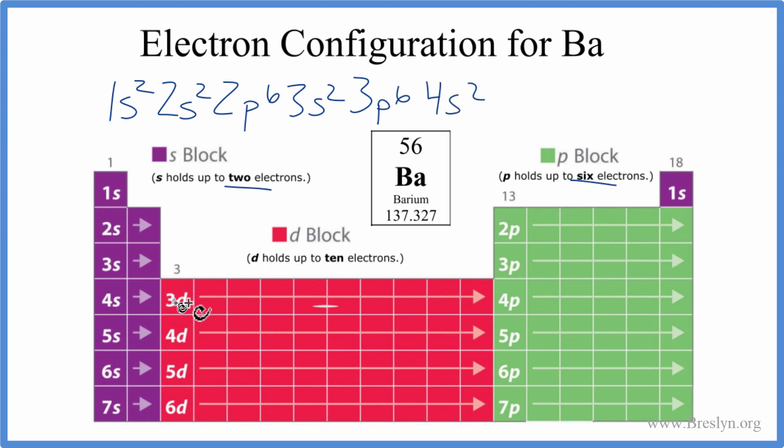4s2, 3d, and d orbitals can hold up to 10 electrons. So we'll put 10 electrons in there, 4p6. From 4p6 we go to 5s2, and then let's move this over so we have a little more room here.